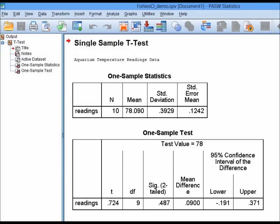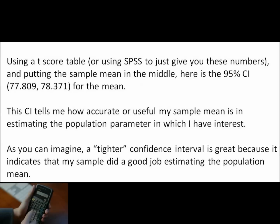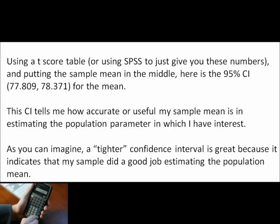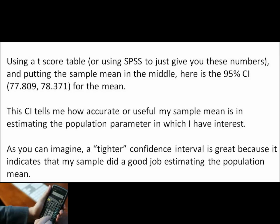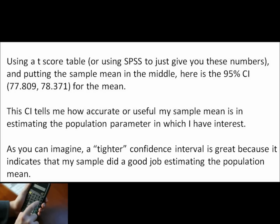Here's the output. I used a t-score table or SPSS to get the 95% confidence interval. The limits for that confidence interval are 77.809 to 78.371. That tells me how accurate or useful my sample mean is in estimating the population parameter.